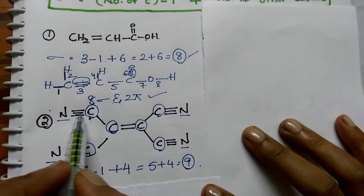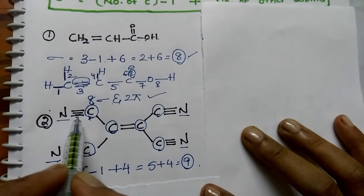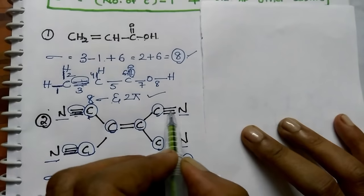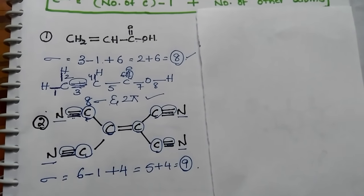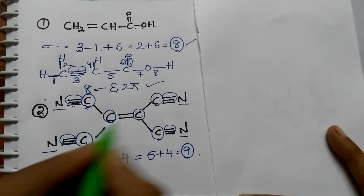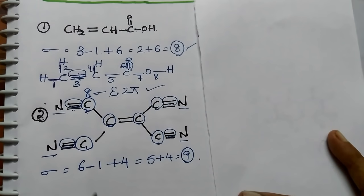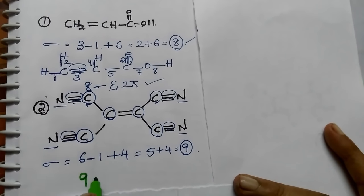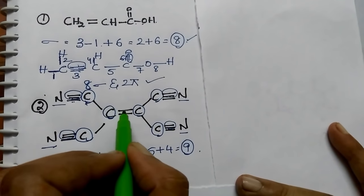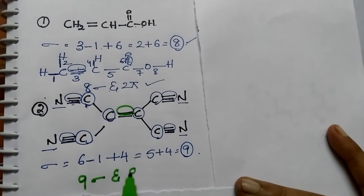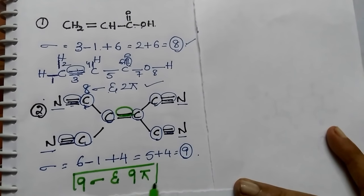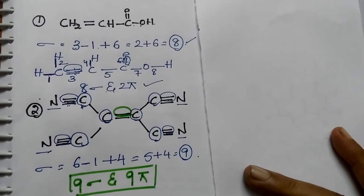Now calculate the number of pi bonds. Out of 3 bonds, 1 is sigma and remaining 2 are pi. There are multiple triple/double bonds contributing: 2 plus 2 is 4, plus 2 is 6, plus 2 is 8, and one more pi — total 9 pi bonds. So 9 sigma and 9 pi bonds are there.